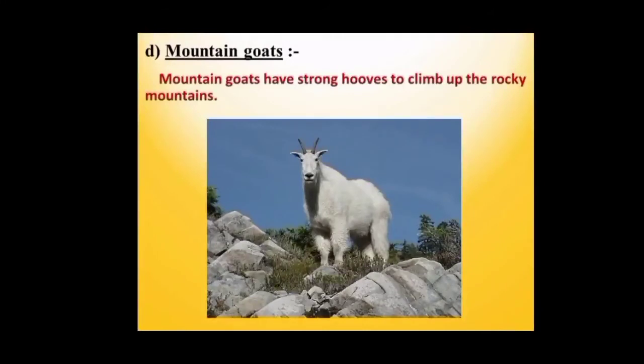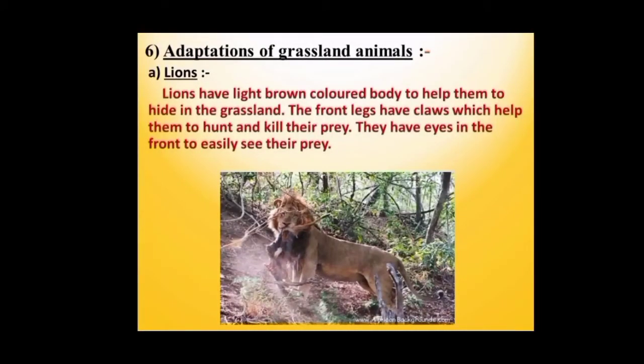Let us see this beautiful white mountain goat. Mountain goats have strong hooves to climb up the rocky mountain. Now let us move forward to the habitat of grasslands. A lion lives in a forest or a grassland and is a very strong animal that can hunt and kill animals like deer. Lions have light brown colored bodies to help them hide in the grassland. Their front legs have claws which help them to hunt and kill their prey. They have eyes in the front to easily see their prey. In this picture, you can see a lion hunting its prey.